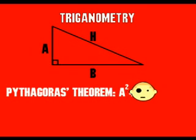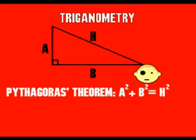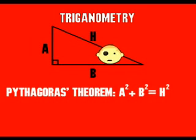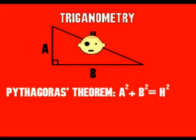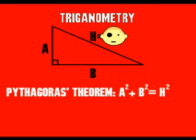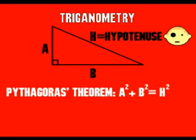A squared plus B squared equals C squared. Not difficult, you'll agree. Right angle triangles have three sides. One's got a funny name. The longest side is the hypotenuse, pardon me. The other two make up this game.